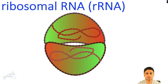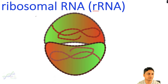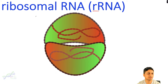The third type of RNA is ribosomal RNA, in short called rRNA. These ribosomal RNAs are the core of the ribosomes. They are associated with other ribosomal protein complexes to form a ribosome, and they are responsible for protein synthesis.